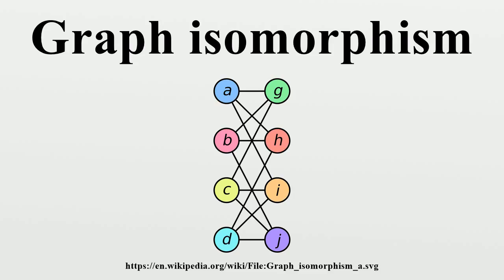Whitney Theorem: The Whitney Graph Isomorphism Theorem, shown by H. Whitney, states that two connected graphs are isomorphic if and only if their line graphs are isomorphic, with a single exception: K3, the complete graph on three vertices, and the complete bipartite graph K1,3, which are not isomorphic but both have K3 as their line graph.